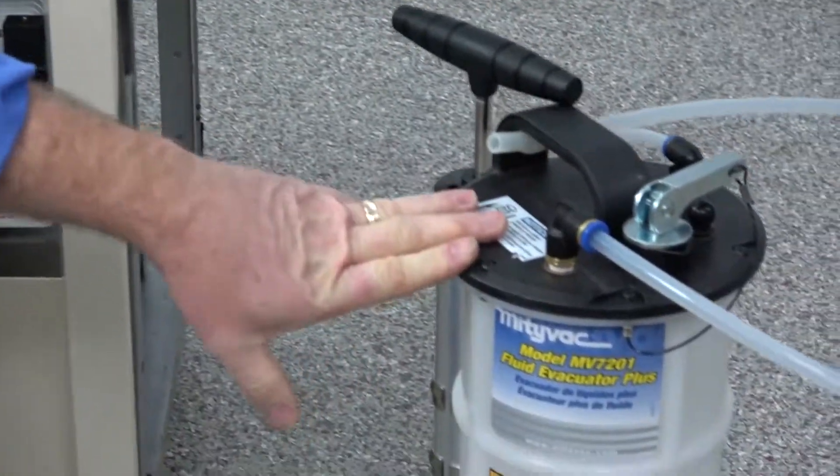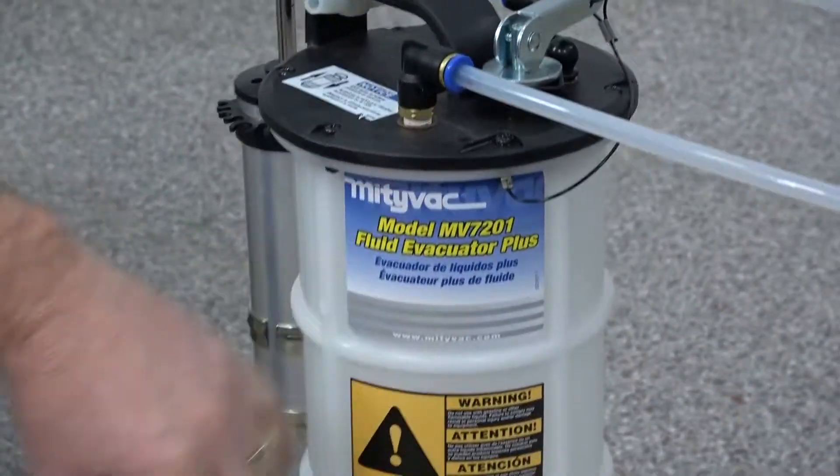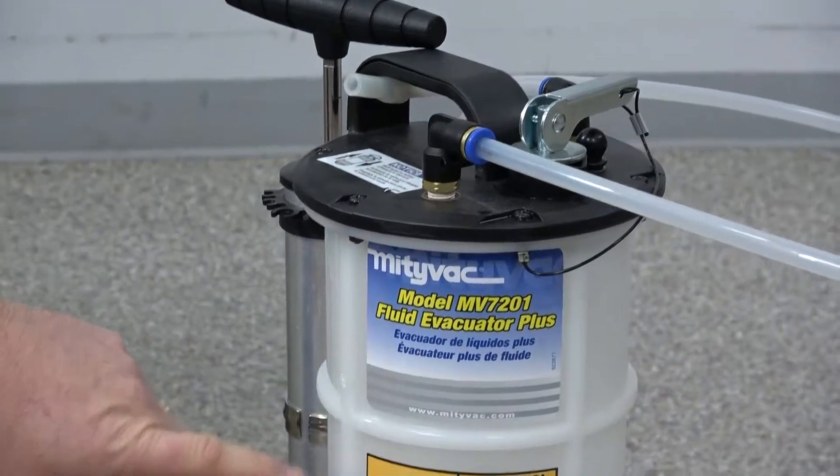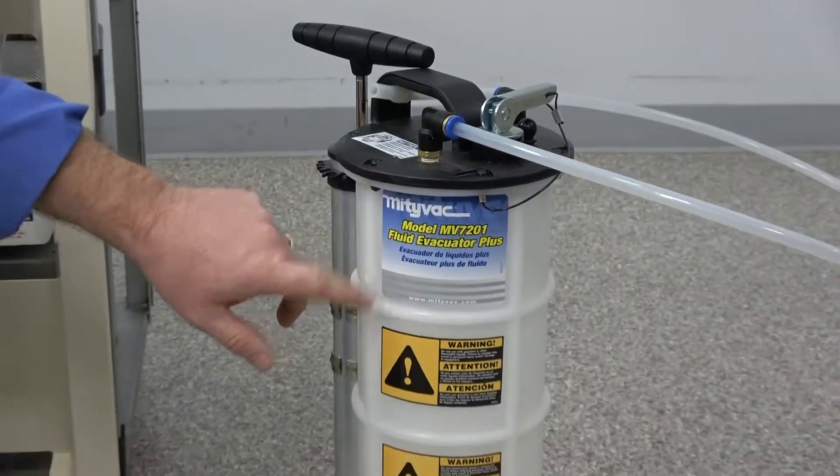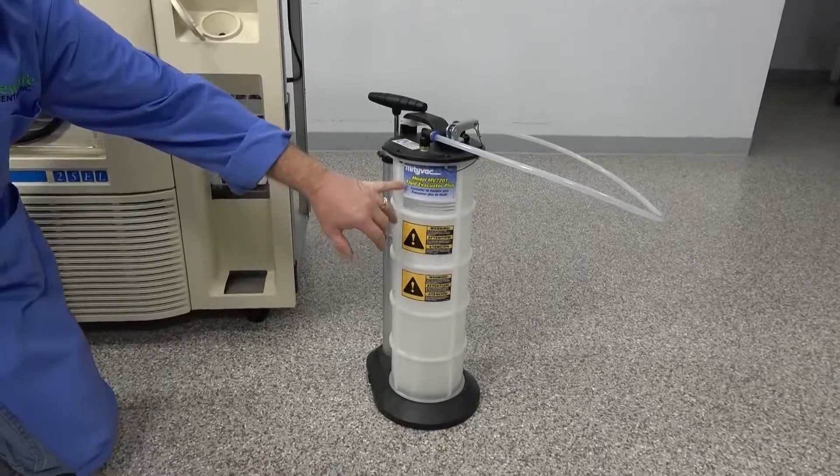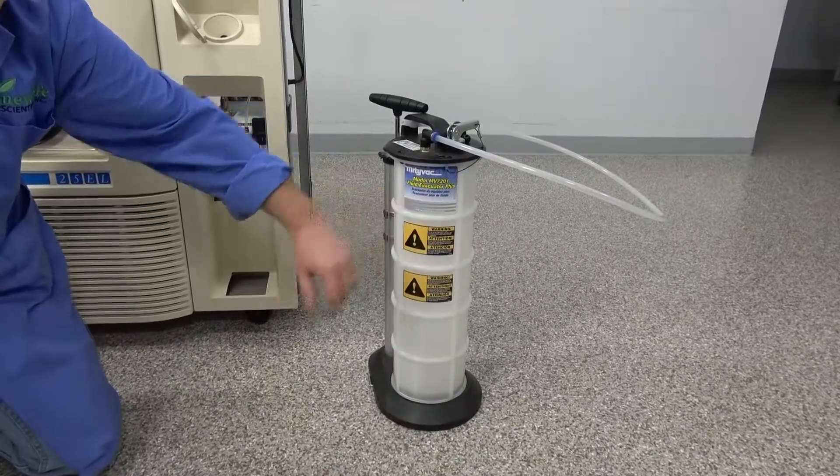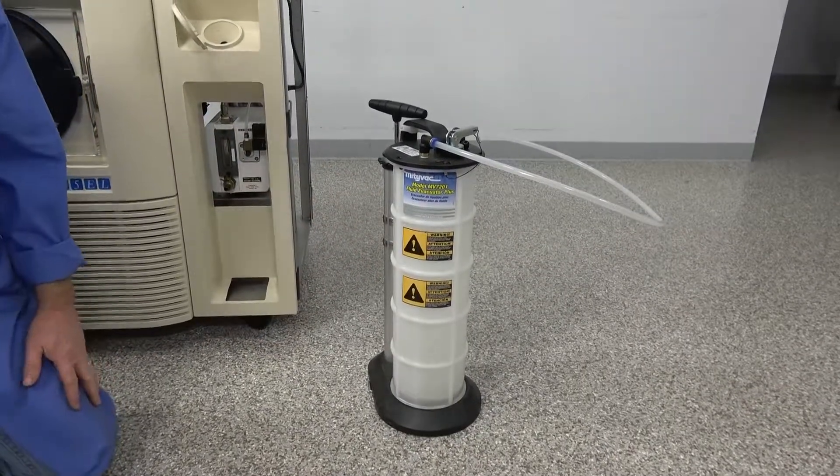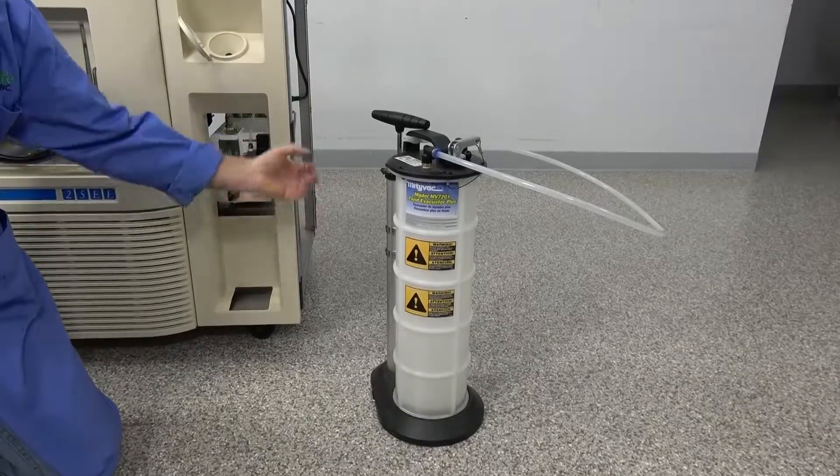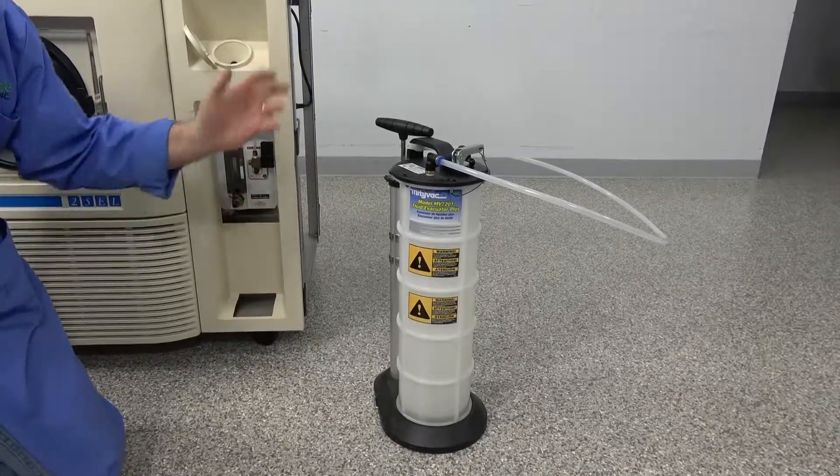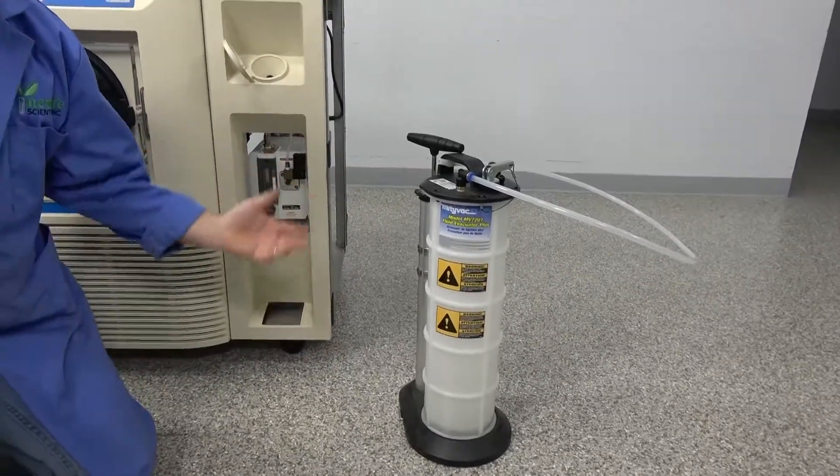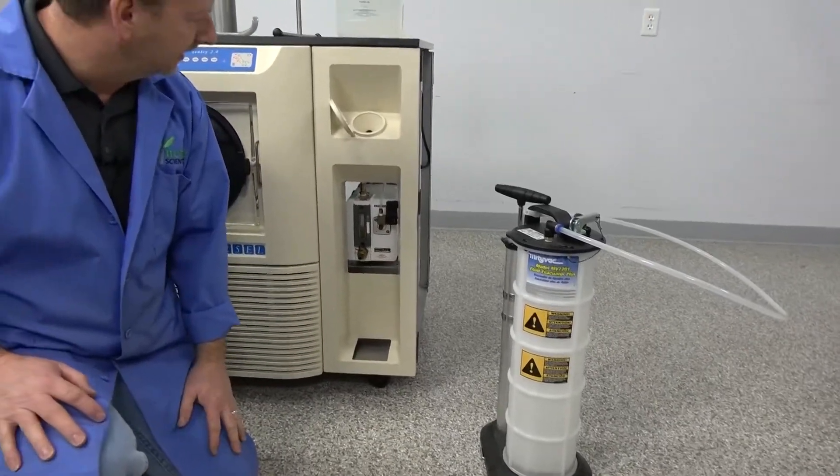But I also want to point out a really nice vacuum for fluids - this is the Mighty Vac. This is what we use for evacuations and sucking up all the oil in different projects, but works great for these too. It's just a fluid evacuation that we hook up and we pump the handle and it creates a vacuum and sucks the oil right in there. Literally no messes or anything you have to deal with.